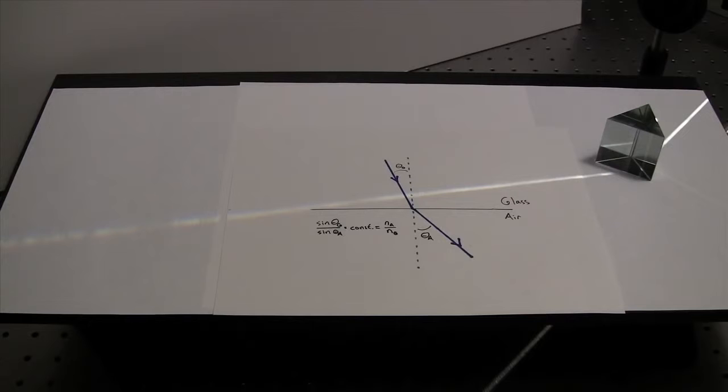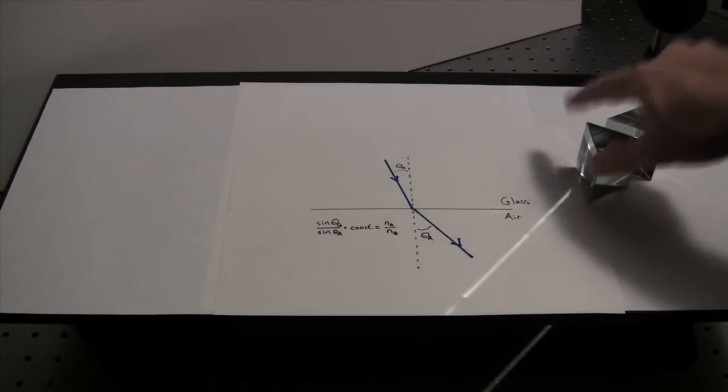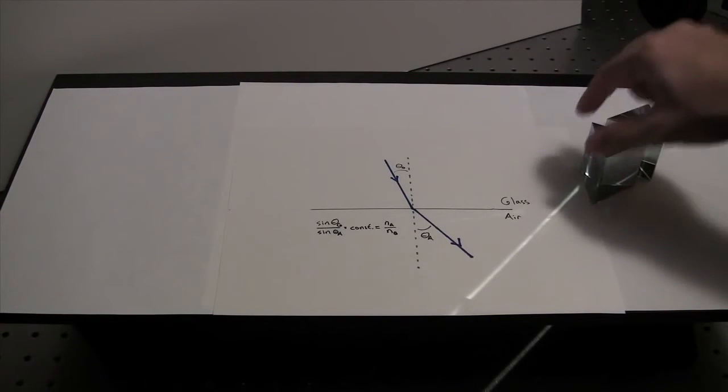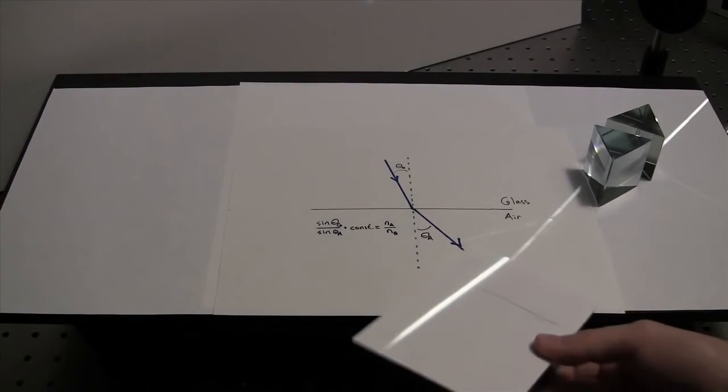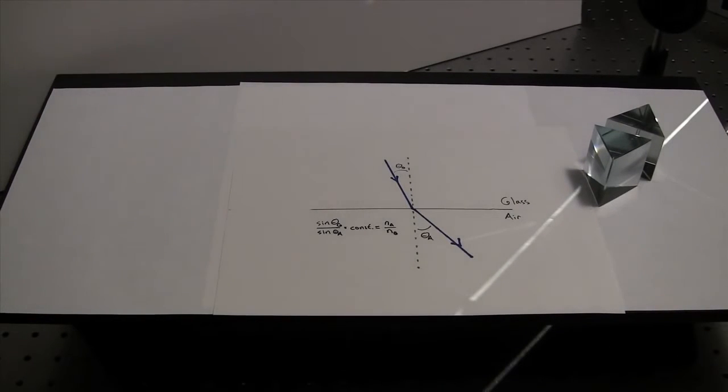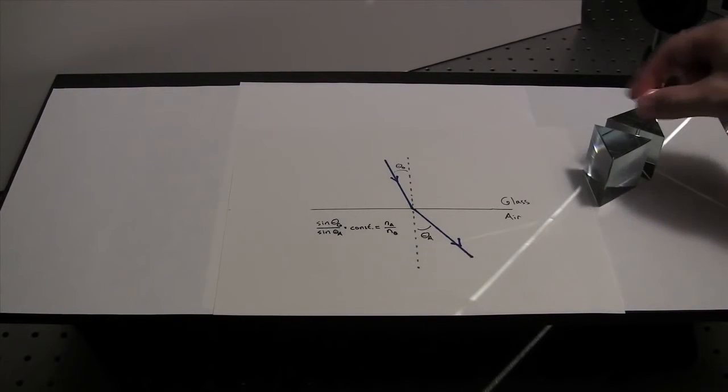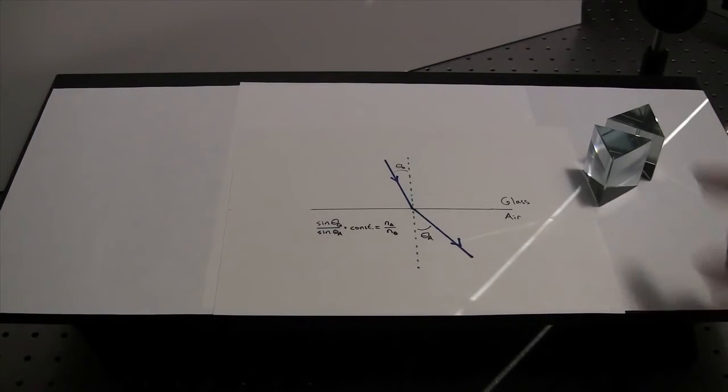So a lot of books draw this system where we start with our original prism and we put a second one in something like this. And to our eyes, this looks like it's working, but it's not really. All that's really happening is the light hasn't had enough time to spread.